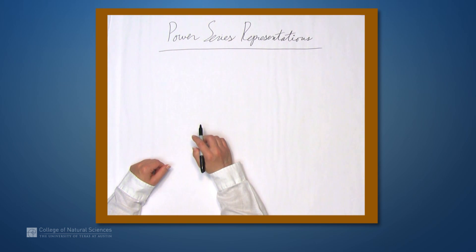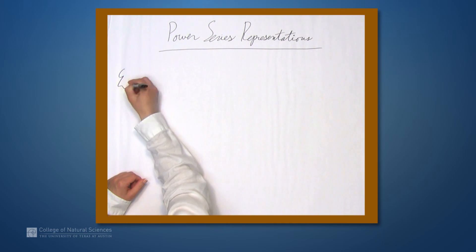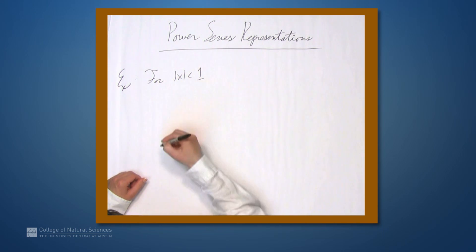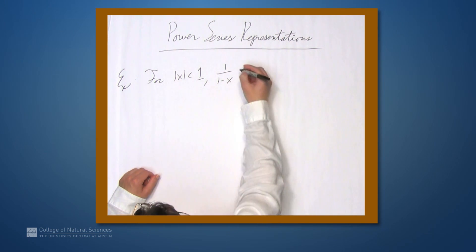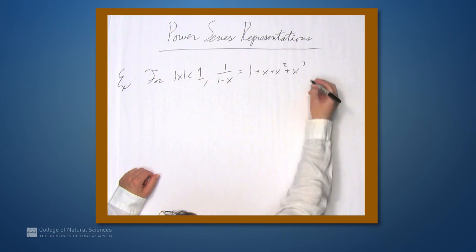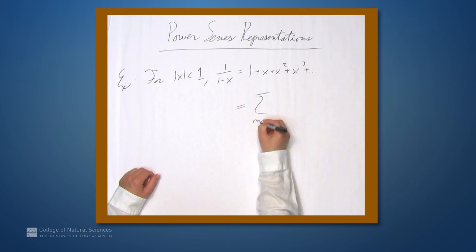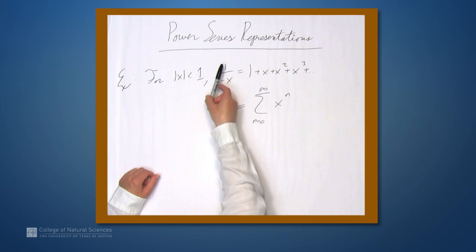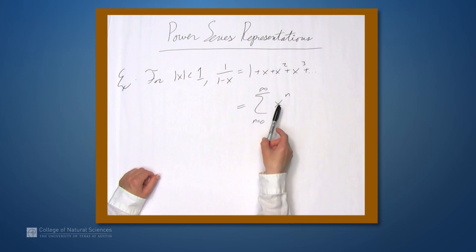We're here at the example table, and in this video we're going to be talking about power series representations of functions. Starting with something we already know: whenever the absolute value of x is less than 1, the function 1 over 1 minus x equals 1 plus x plus x squared plus x cubed and so on, which is the sum from n equals 0 to infinity of x to the n. This is a power series representation of 1 over 1 minus x with radius of convergence 1.